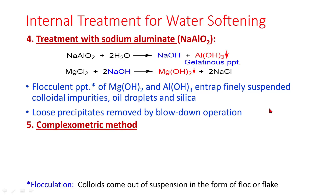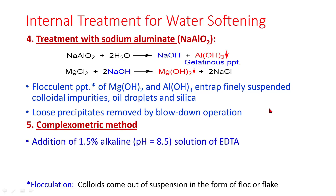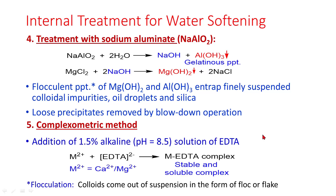In the complexometric method, a 1.5% alkaline solution of EDTA at pH 8.5 is added. Calcium or magnesium ions with EDTA form a stable, water-soluble calcium-magnesium EDTA complex. Hence it does not create a problem as far as scale and sludge formation is concerned.